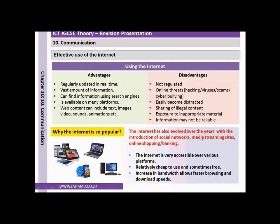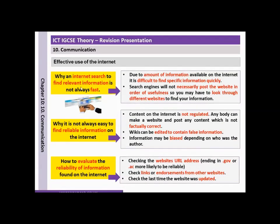The internet has evolved over the years with the introduction of social networks, media streaming sites, online shopping and online banking. The internet is very accessible now over various platforms and across different countries, relatively cheap and sometimes free to use, and increasing bandwidth allows faster browsing and download speeds. Due to the vast amount of information available, it can be difficult to find specific information quickly.